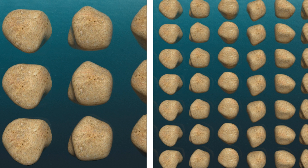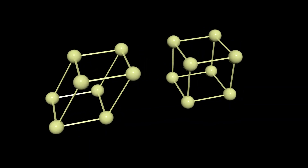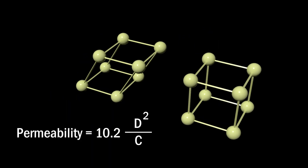It was discovered that the rate of fluid flow is directly proportional to the square of the grain diameter. Number two: mode of packing, where permeability is equal to 10.2 d² over c. C is called the packing constant, which depends on both mode of packing and porosity.